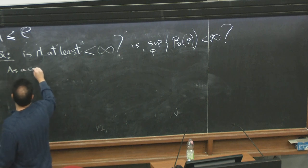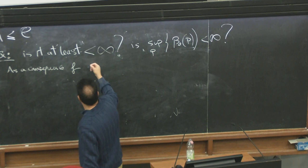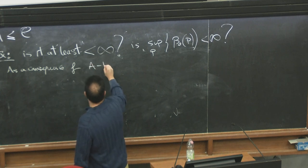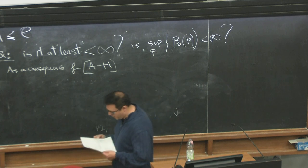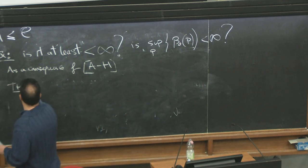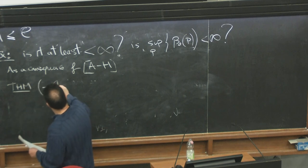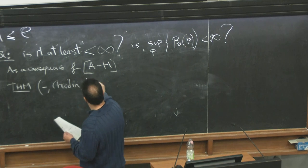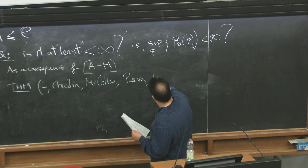As a consequence of the theory of Ananyan and Hochster, of the solution of Stillman conjecture, one gets as a result—we have it in a joint paper, myself, Marc Chardin, Jason, Irena, Pera, and Matteo—